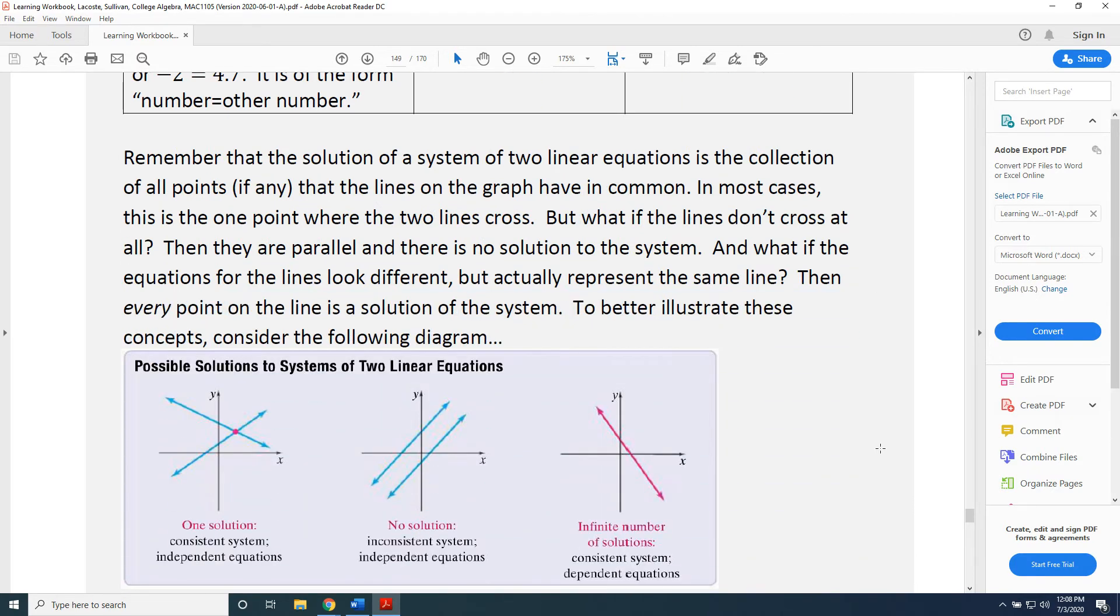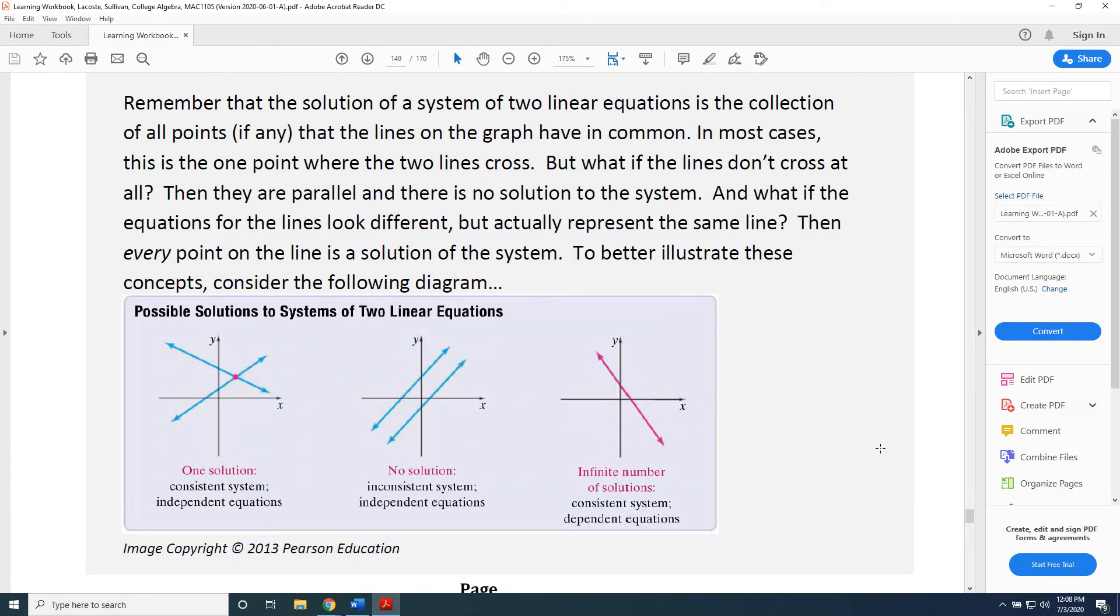Remember that the solution of a system of two linear equations is the collection of all points, if any, that the lines on the graph have in common. In most cases, this is the one point where the two lines cross. But what if the two lines don't cross at all? Then they are parallel, and there is no solution to the system.